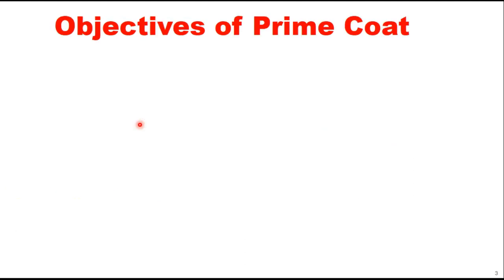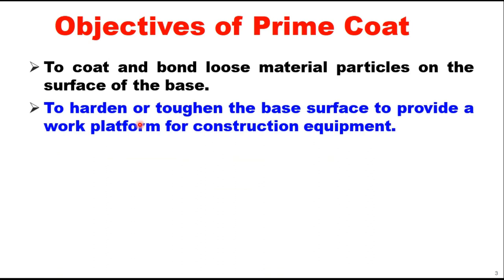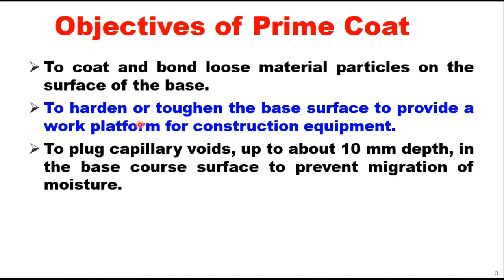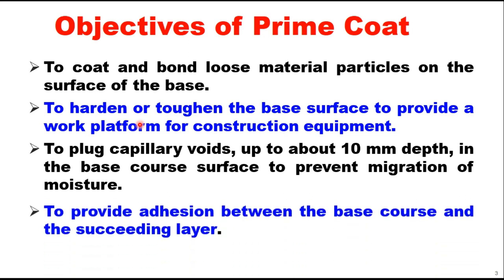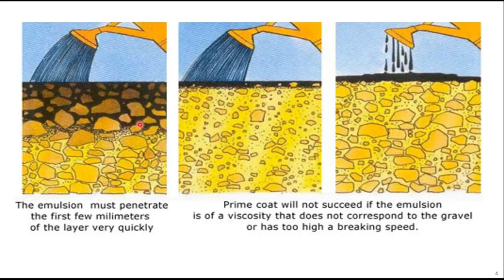The objectives of providing prime coat are many: to coat and bond loose material particles on the surface of the base; to harden or toughen the base surface; to provide a work platform for construction equipment; to plug capillary voids up to about 10 millimeter depth in the base coat surface; to prevent migration of moisture; and to provide adhesion between the base course and the succeeding layer.